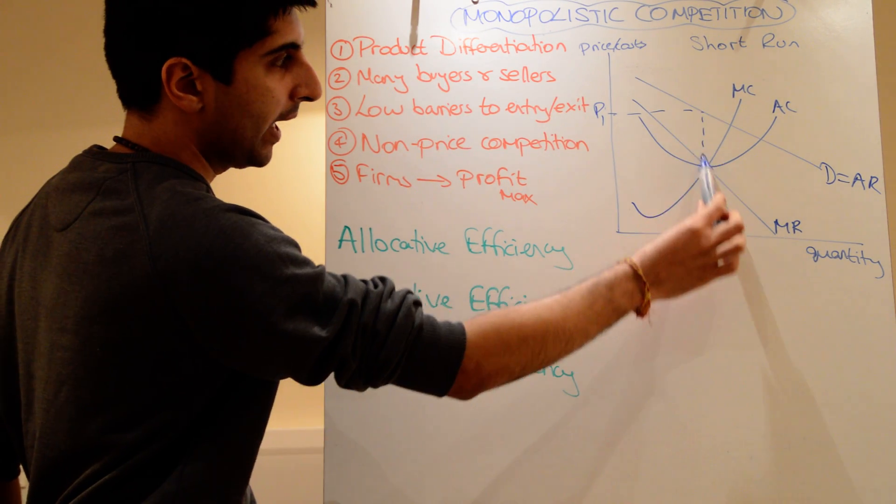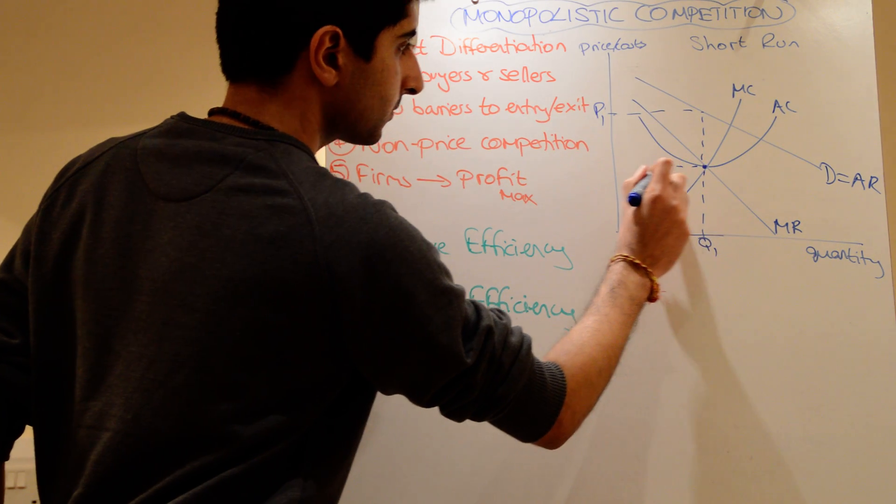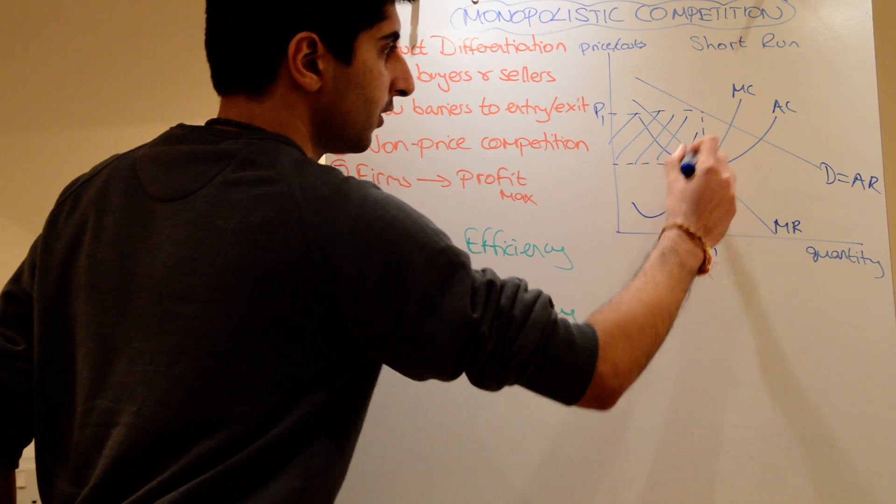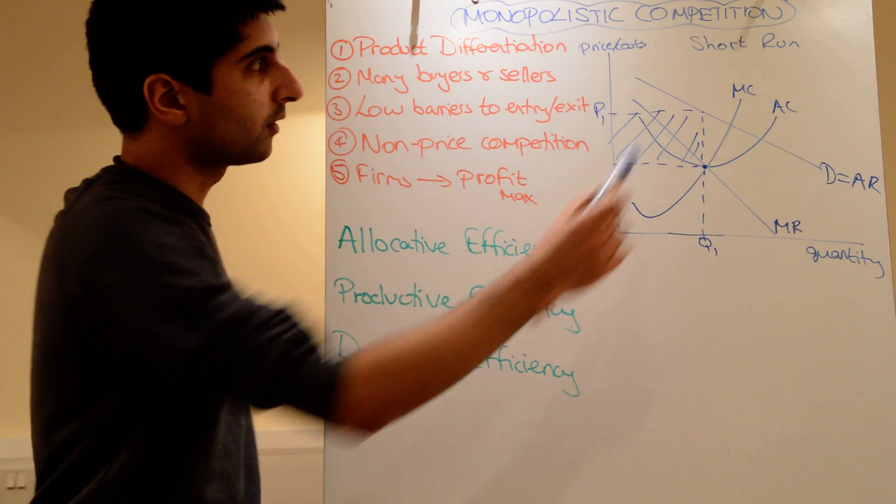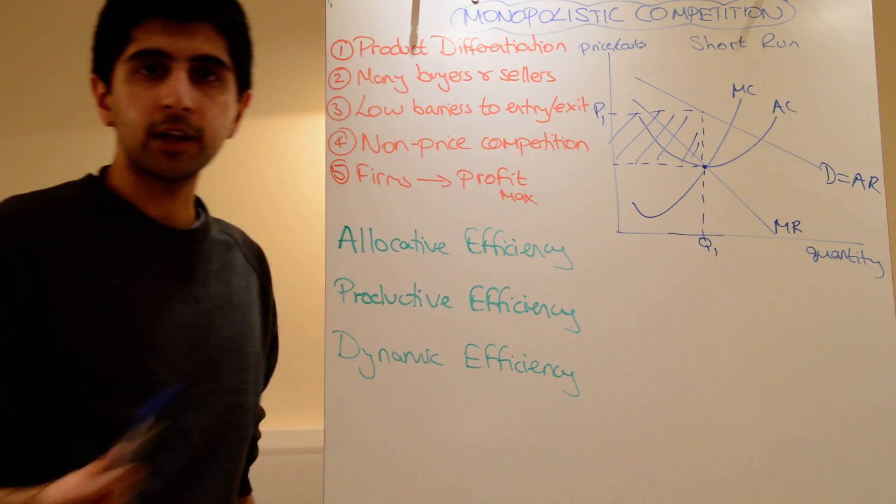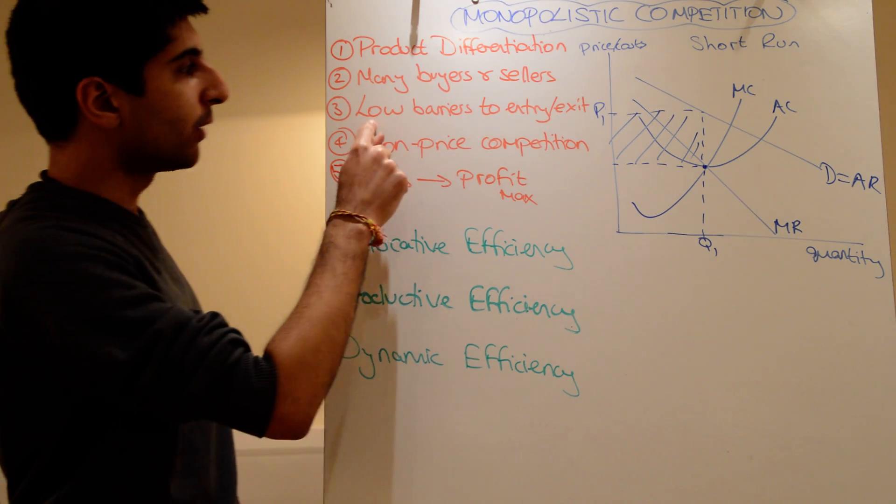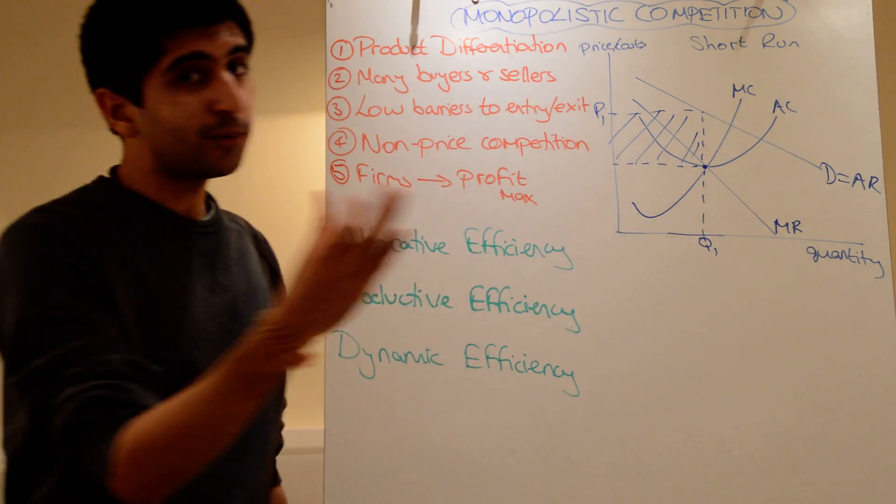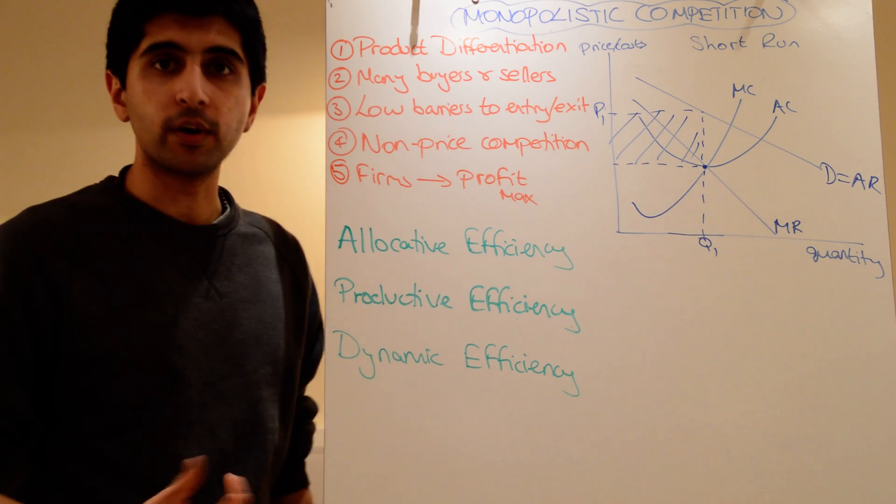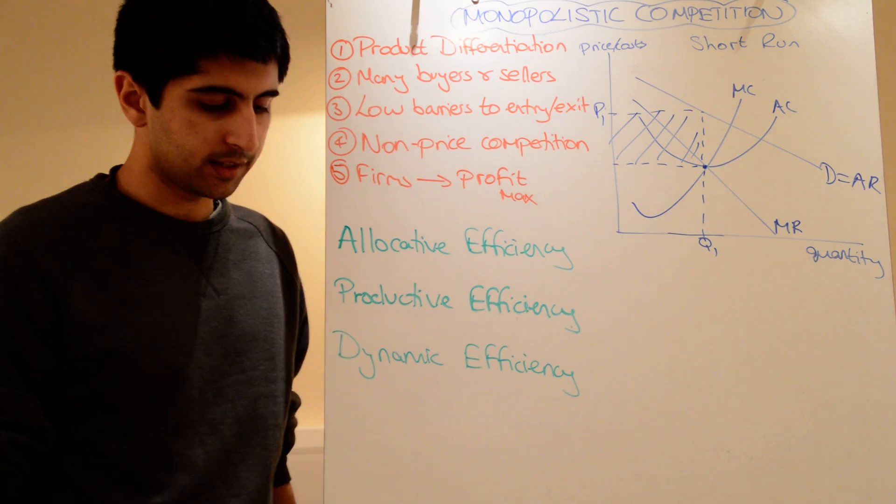AR is up there, AC is way down here. So that total area tells us the total profit. Simple stuff, right? The problem is that this is only in the short run. This only is applicable in the short run because there are very low barriers to entry and exit. So these massive supernormal profits which have been made in the short run are going to signal new entry into the market.